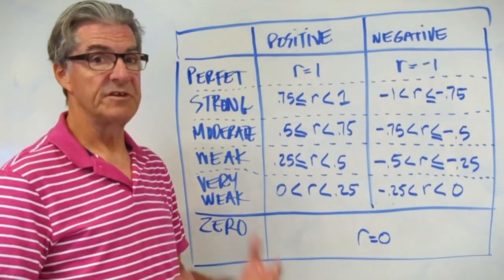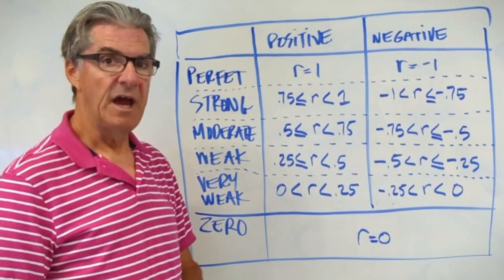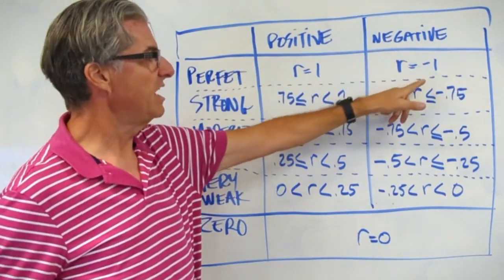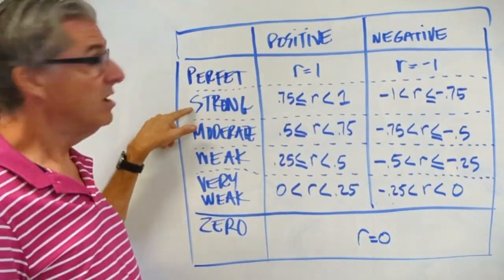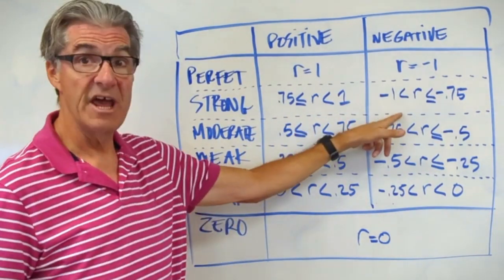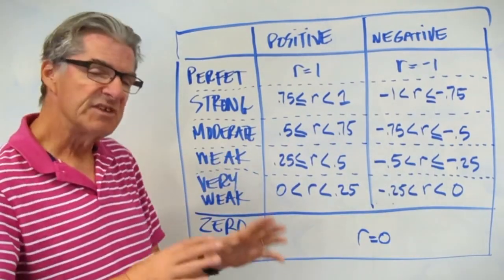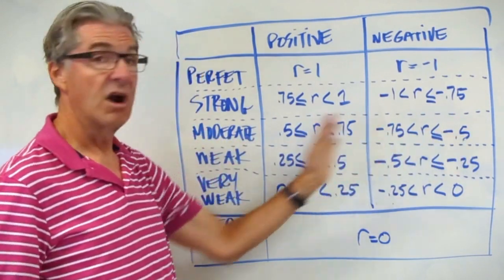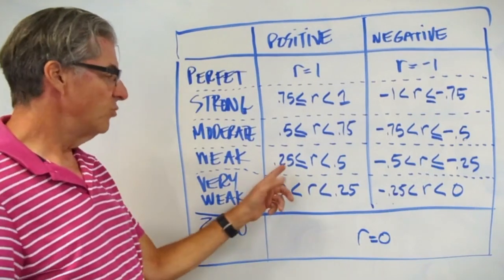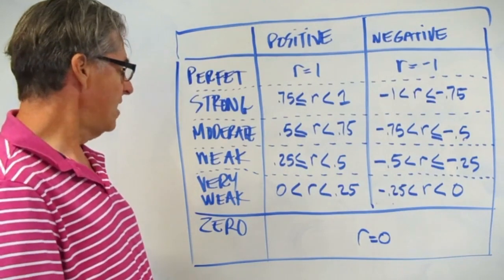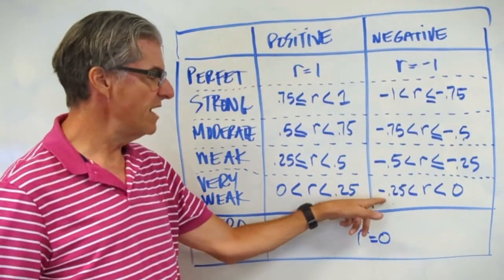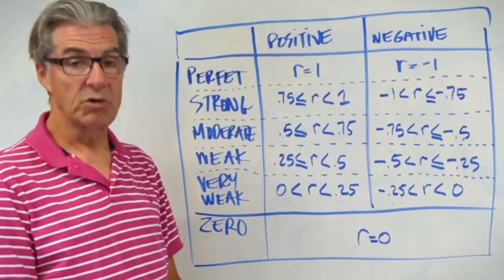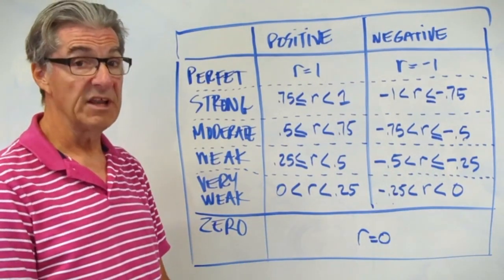Let's talk about the descriptors that go with the ranges in the R value — the positive and negative work in the same way. Perfect positive correlation: R is 1. Perfect negative: R is negative 1. Strong is between 0.75 and 1 — that's a strong either positive or negative correlation. The next modifier is moderate — not quite strong, but it's there — and that's between 0.5 and 0.75, or between negative 0.75 and negative 0.5 for your R value. Then we have weak, which is between 0.25 and 0.5, and very weak, which is 0.0 to 0.25 and negative 0.25 to 0. Zero correlation doesn't matter — it's not negative or positive. This is a key for your descriptors when you're asked to describe the correlation you see in a data set.